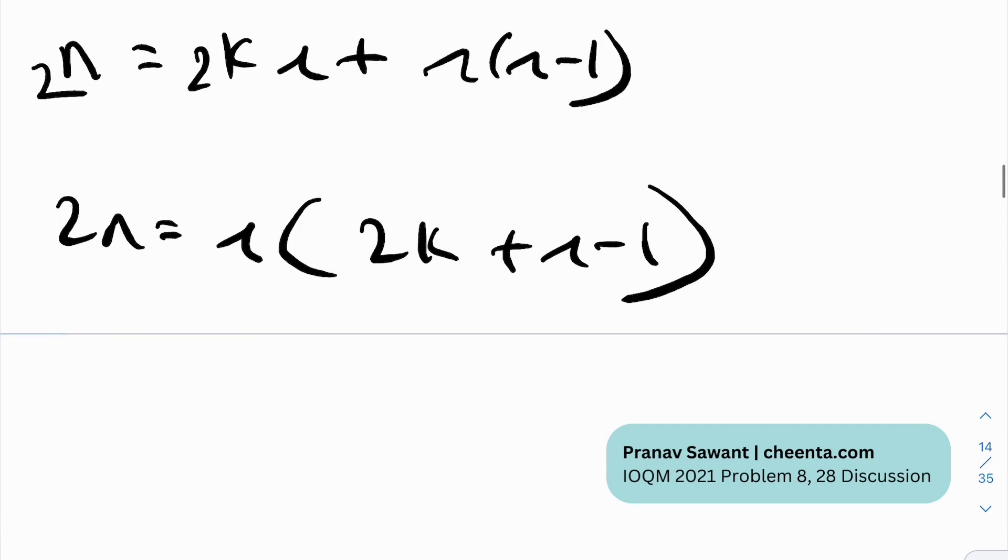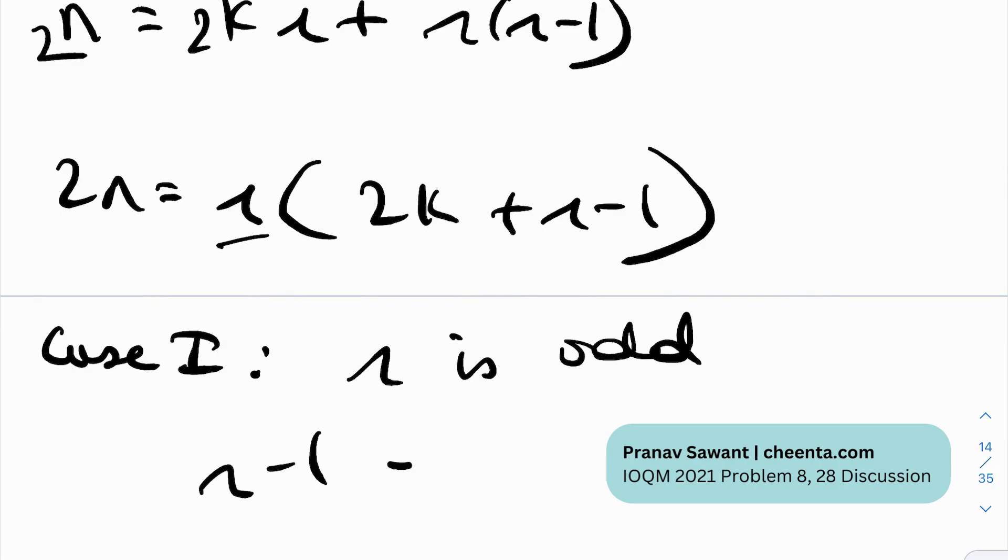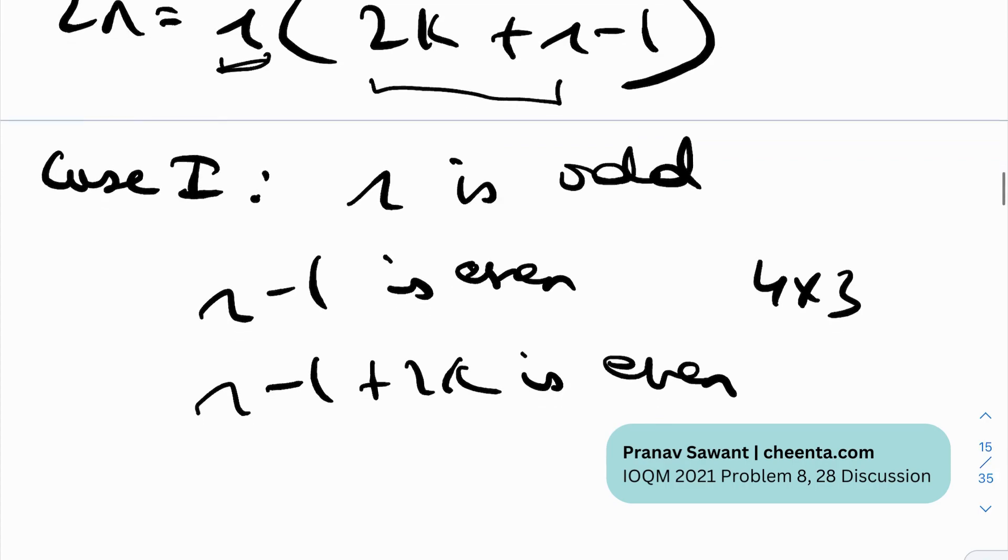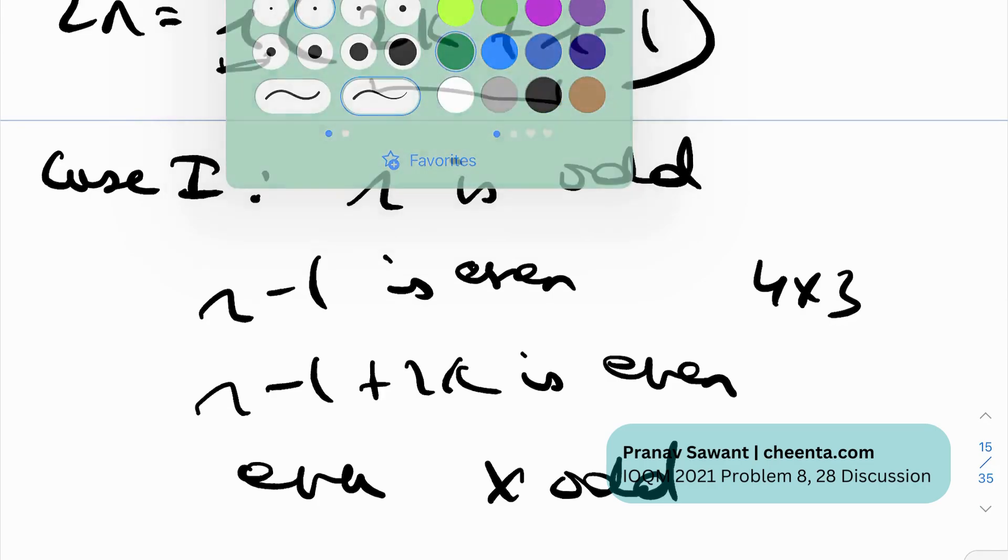Case 1, R is odd. And this is kind of what I was telling you about parity analysis. R is odd. If R is odd, R minus 1 is even. If R minus 1 is even, R minus 1 plus 2K is even. Why? 2K is always even and even plus even is even. So this thing is even. This thing is odd. And even times an odd is an even. So that works out. So you essentially need to know that it's an even times odd. It's not even times even or it's odd times odd. It's even times odd. Let's analyze case 2.